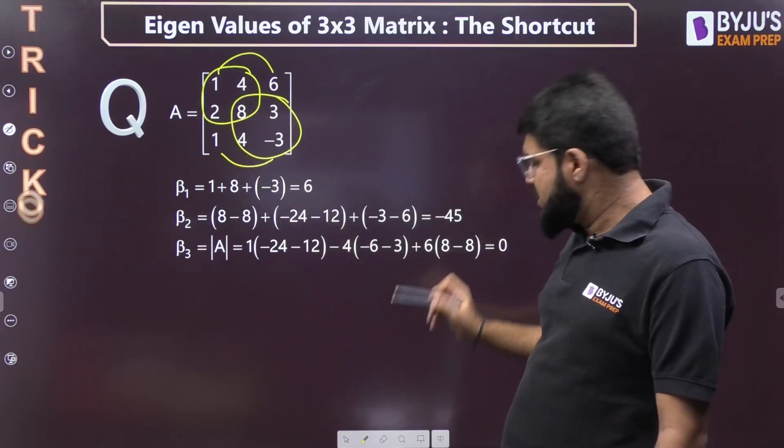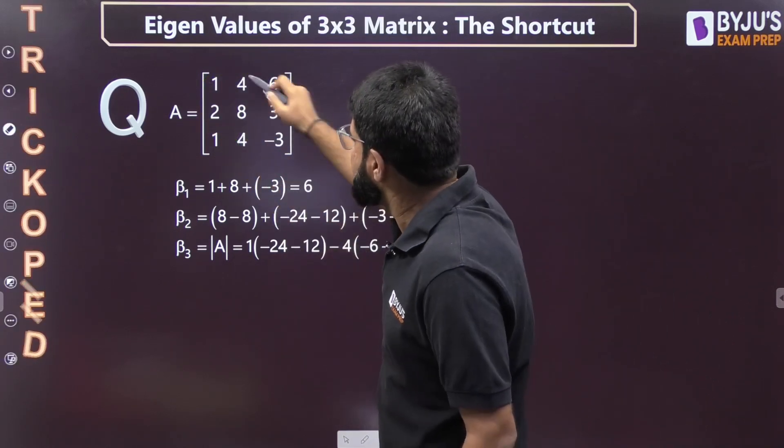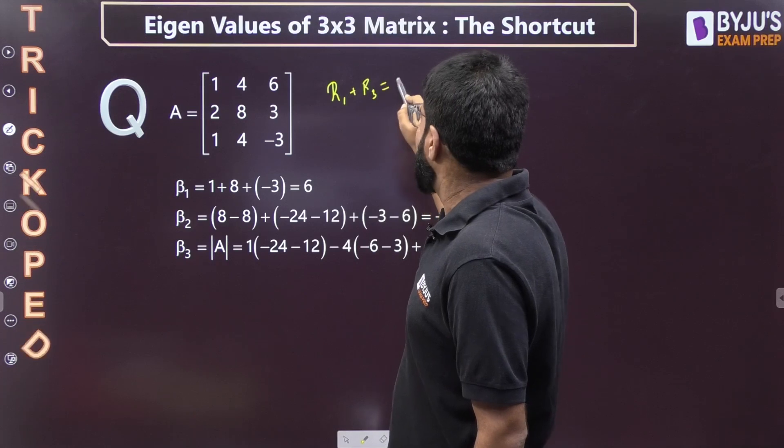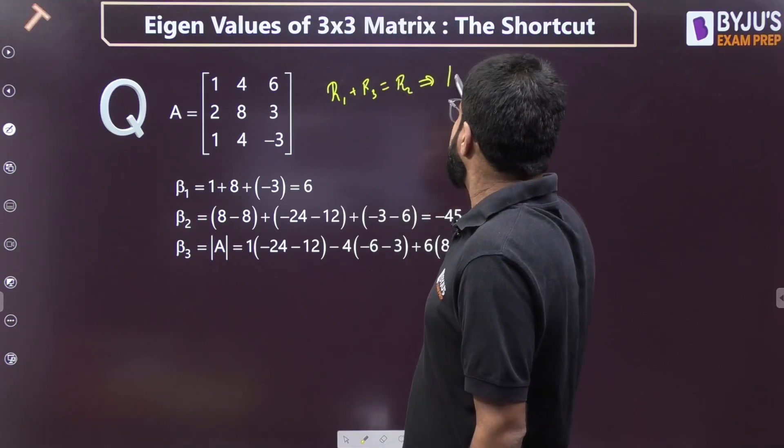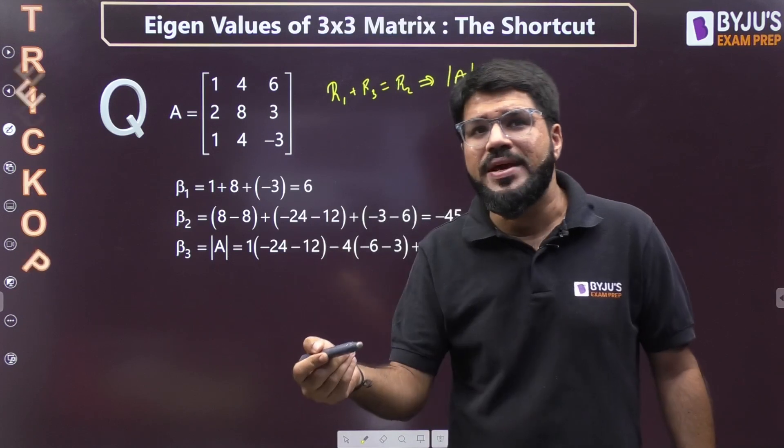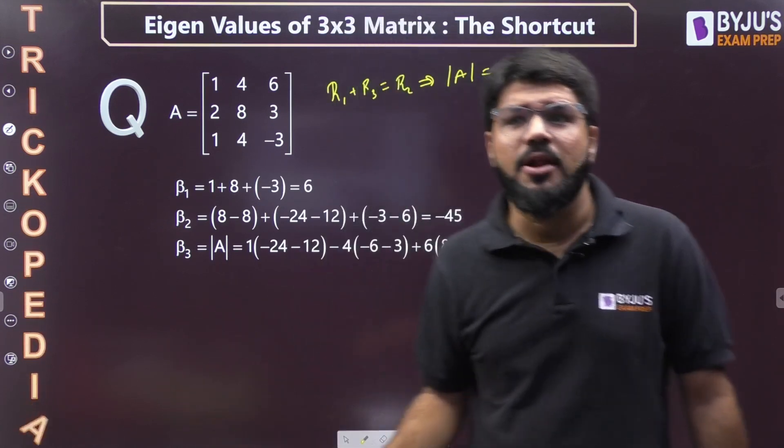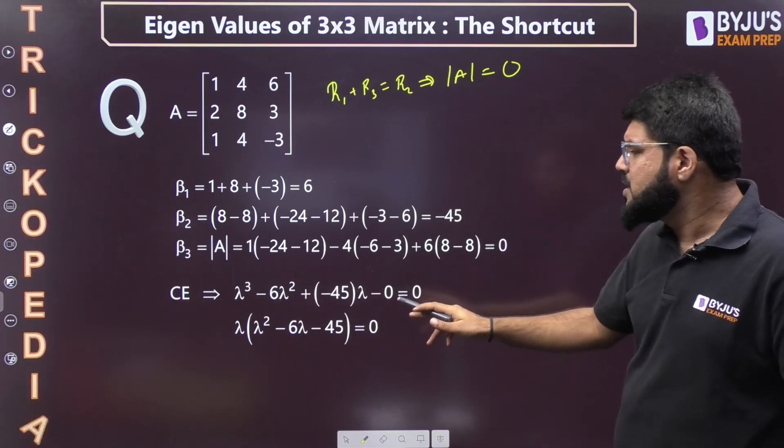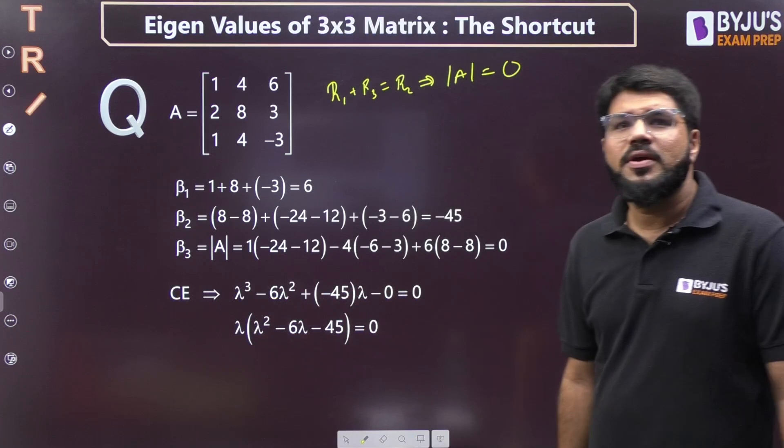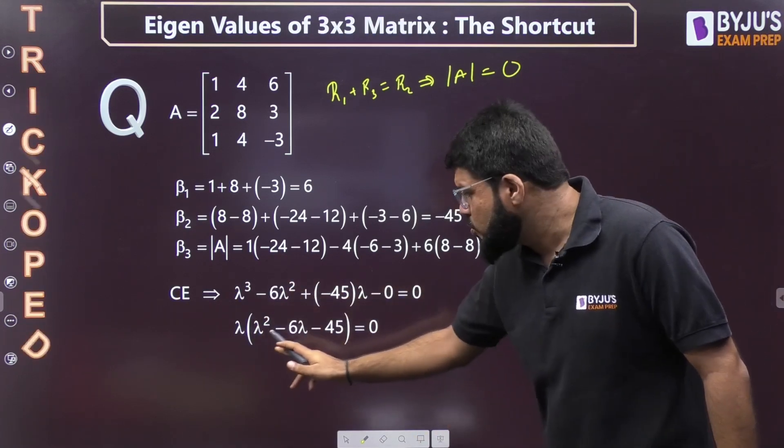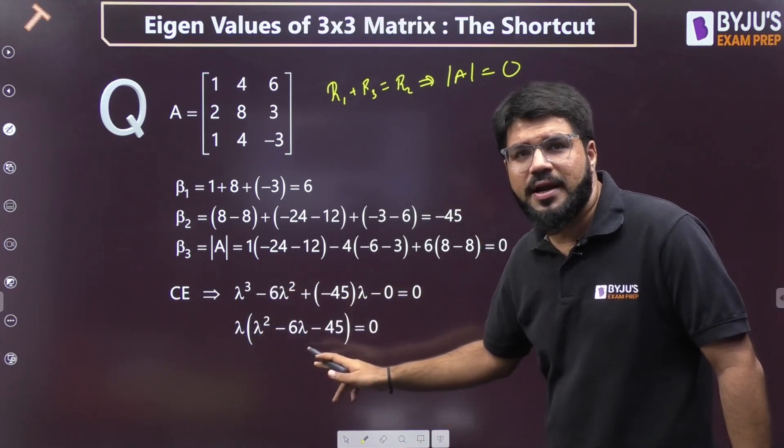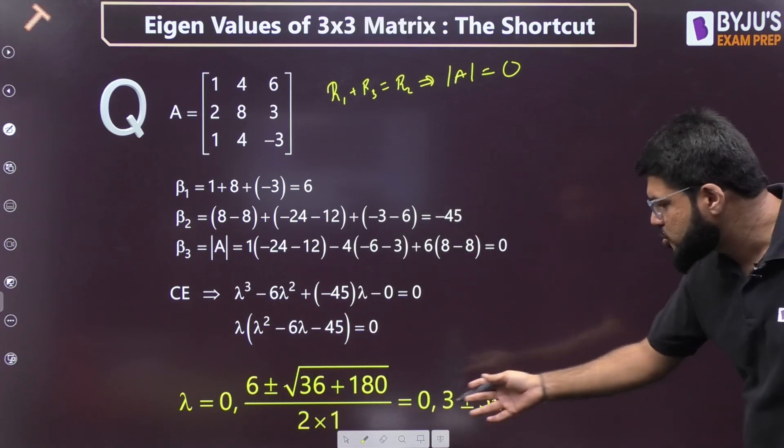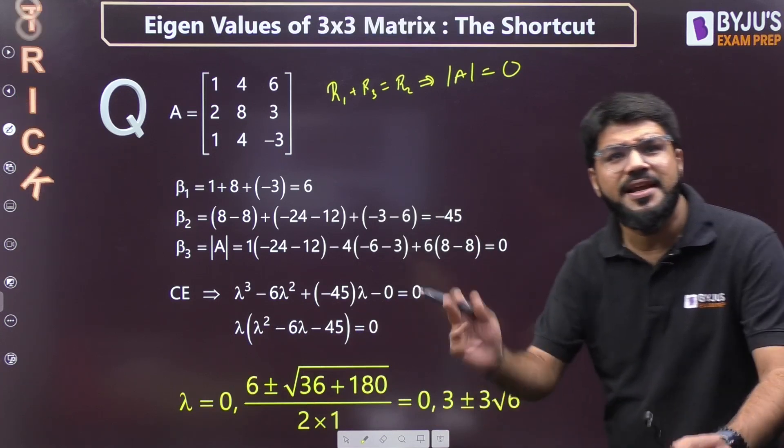The determinant: if you expand about any row, you get 0. If you see, first plus third row equals second row, which means the determinant must be 0 because whenever rows are dependent, the determinant is 0. Because the determinant equals 0, the cubic is converted to quadratic. One eigenvalue is 0. After applying the quadratic formula and solving, we get the eigenvalues very quickly.